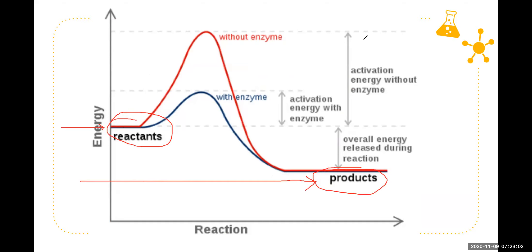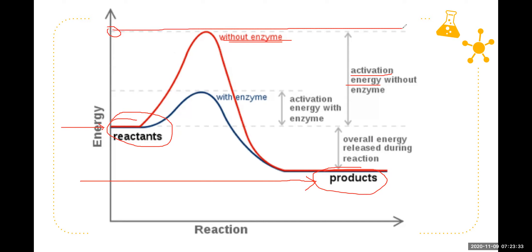Take note that there is what we call activation energy. The activation energy is the energy needed in order for the reaction to proceed — the energy needed to make the reaction truly spontaneous. If you notice the red line on the graph, without the enzyme, in order to create the product from the reactants you would need a significant amount of activation energy to reach before the reaction proceeds smoothly.